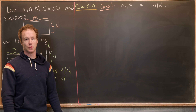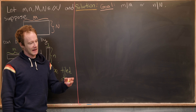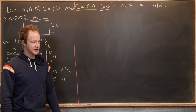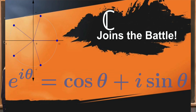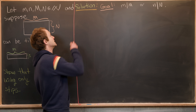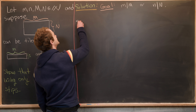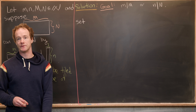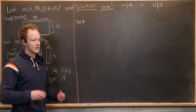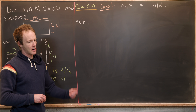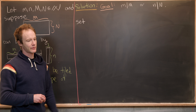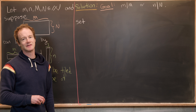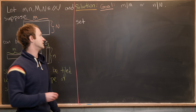Now we're going to work towards showing m divides M or n divides N. Like I alluded to before, we're going to use the notion of complex numbers — in fact, just roots of unity. So let's consider two sets of roots of unity: the little mth roots and the little nth roots of unity.